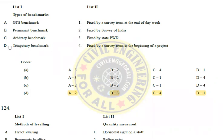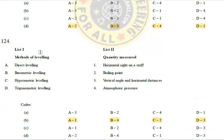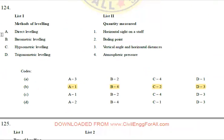The temporary benchmark is fixed by the survey team at the end of the day. Methods of leveling: direct leveling uses a horizontal line of sight from the top.